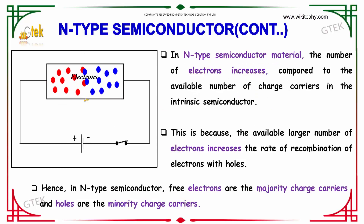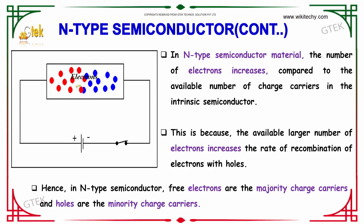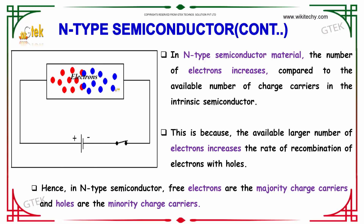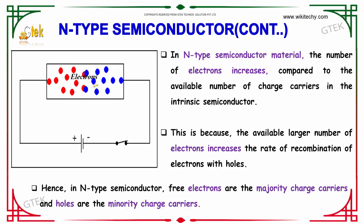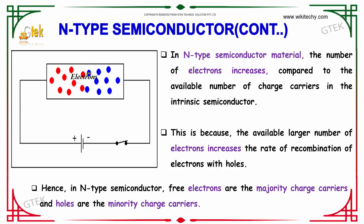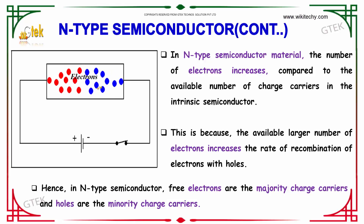In N-type semiconductor material, the number of electrons increases compared to the available number of charge carriers in the intrinsic semiconductor. This is because the large number of available electrons increases the rate of recombination of electrons with holes. Hence, in N-type semiconductors, free electrons are the majority charge carriers and holes are the minority charge carriers.